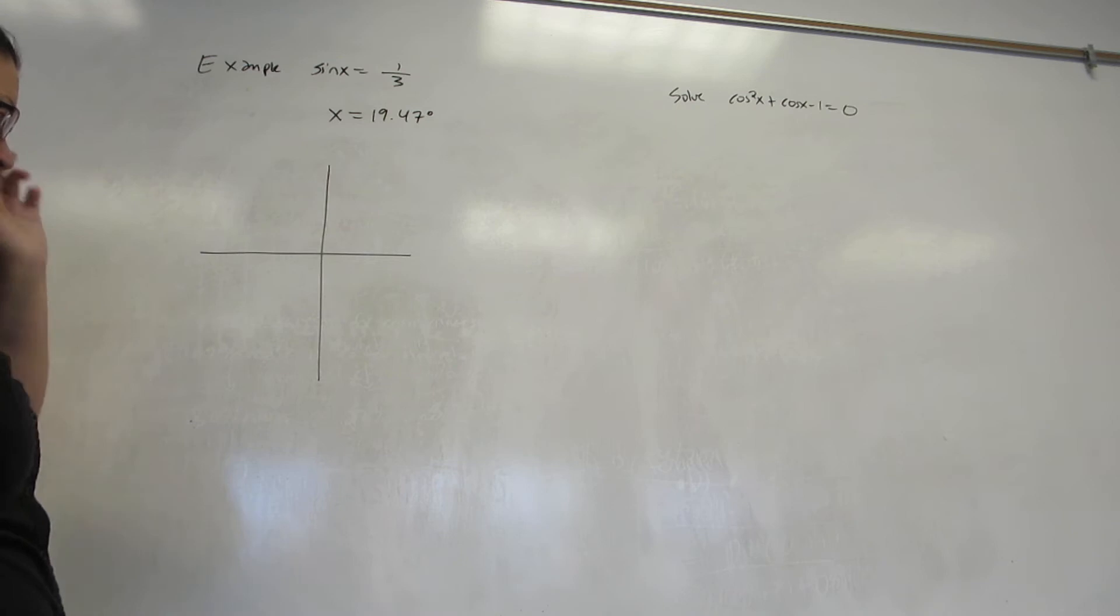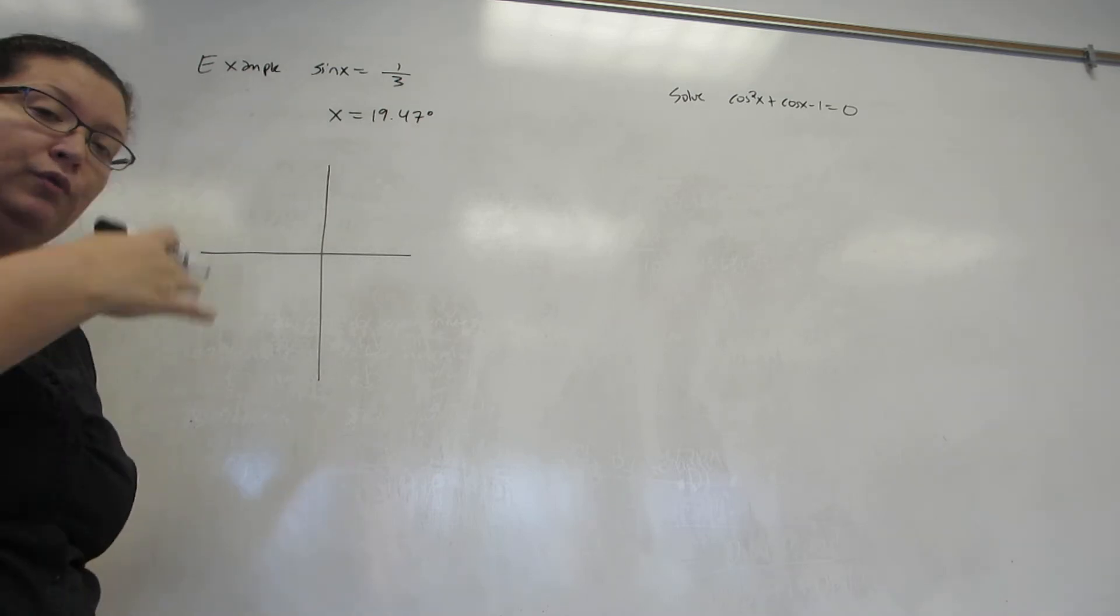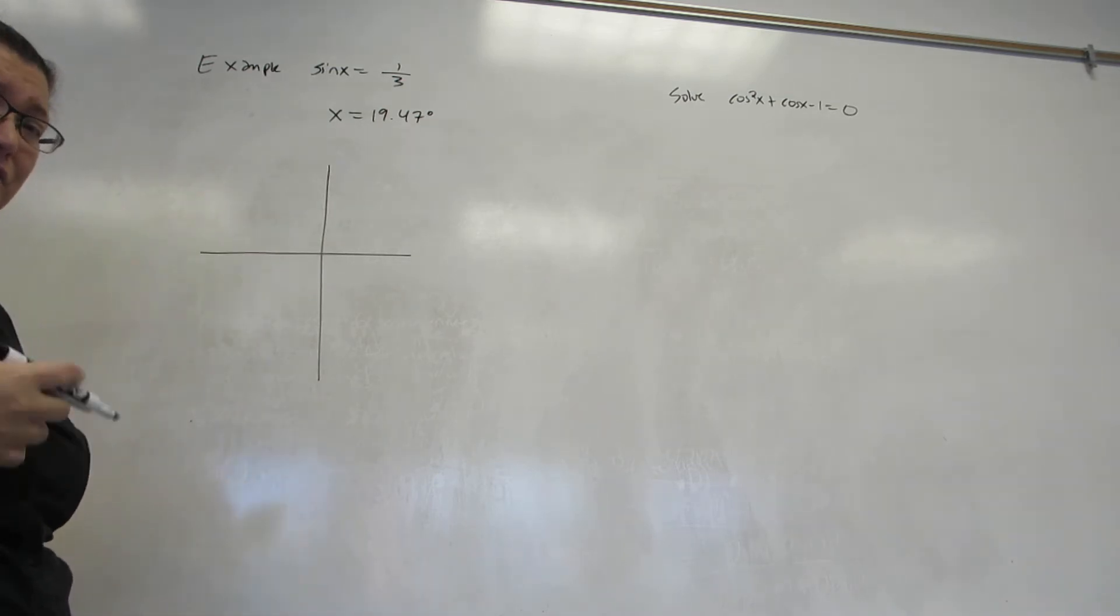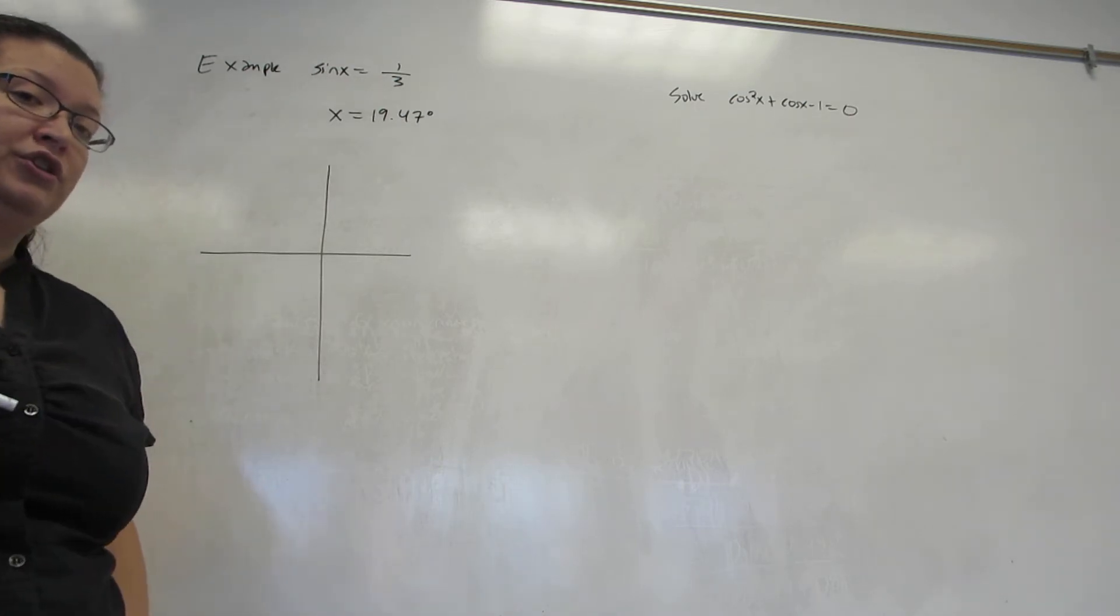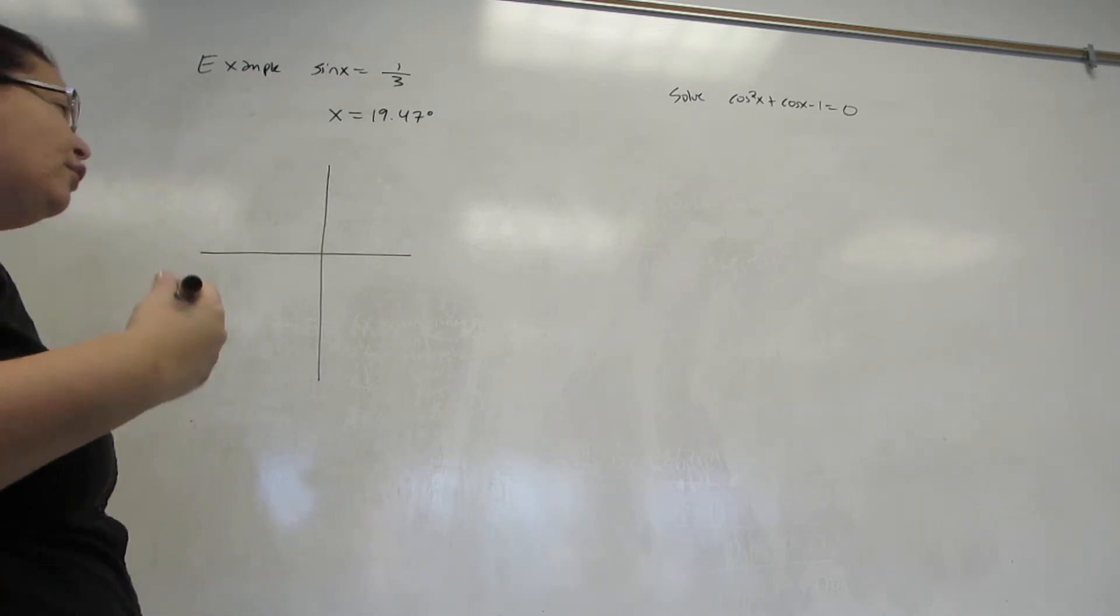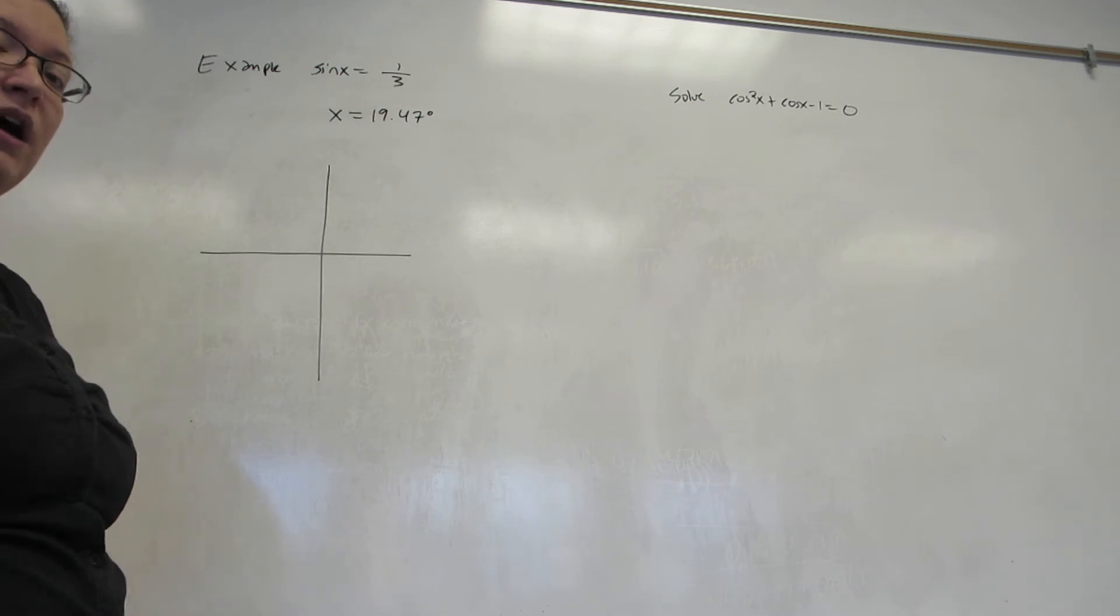Here's the problem. That's only one answer. We know that not only are there two answers within the unit circle range, between 0 and 360, there's actually infinitely many answers to any trigonometric equation. So, how do we get all of them?